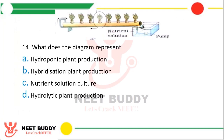Question 14: What does the diagram represent? Options — hydroponic plant production, hybridization plant production, nutrient solution culture, or hydrolytic plant production. The correct answer is option A, hydroponic plant production.